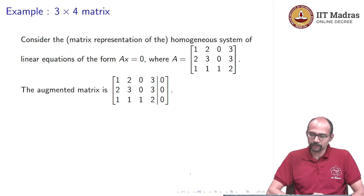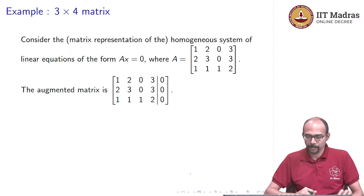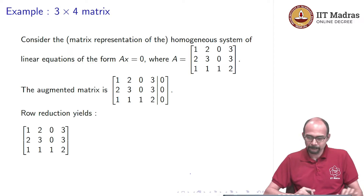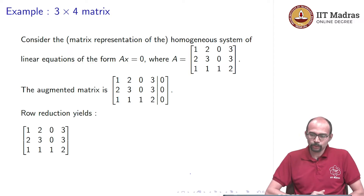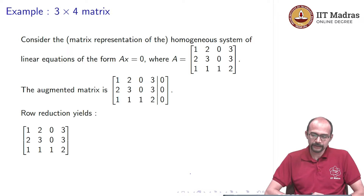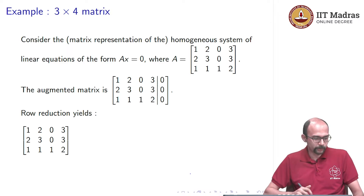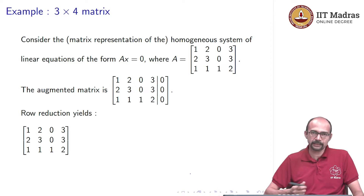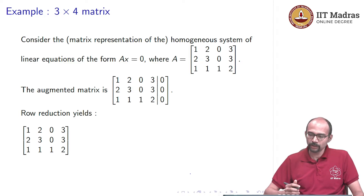The augmented matrix is this. Let us see what row reduction yields. Row reduction is going to give me 1 2 0 3, 2 3 0 3, 1 1 1 2. As I commented in my previous slide, I am going to drop the augmented part.